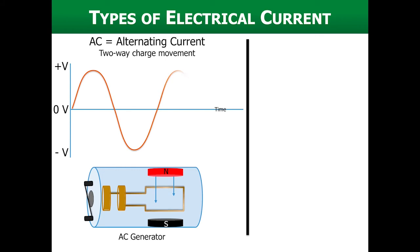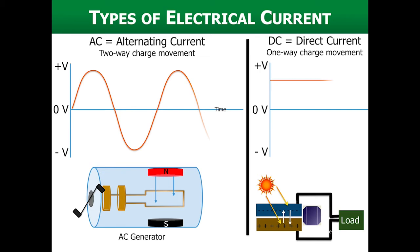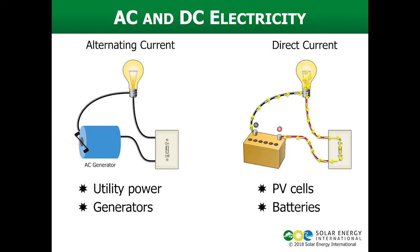Direct current is different. A PV cell, for example, generates direct current — it's a one-way charge movement. You can see in the animation at the bottom that photons of sunlight hit the PV cell, creating movement in our electrons, and they flow out to the load and then back to the source. So it's also creating electricity, but a different type of electricity.